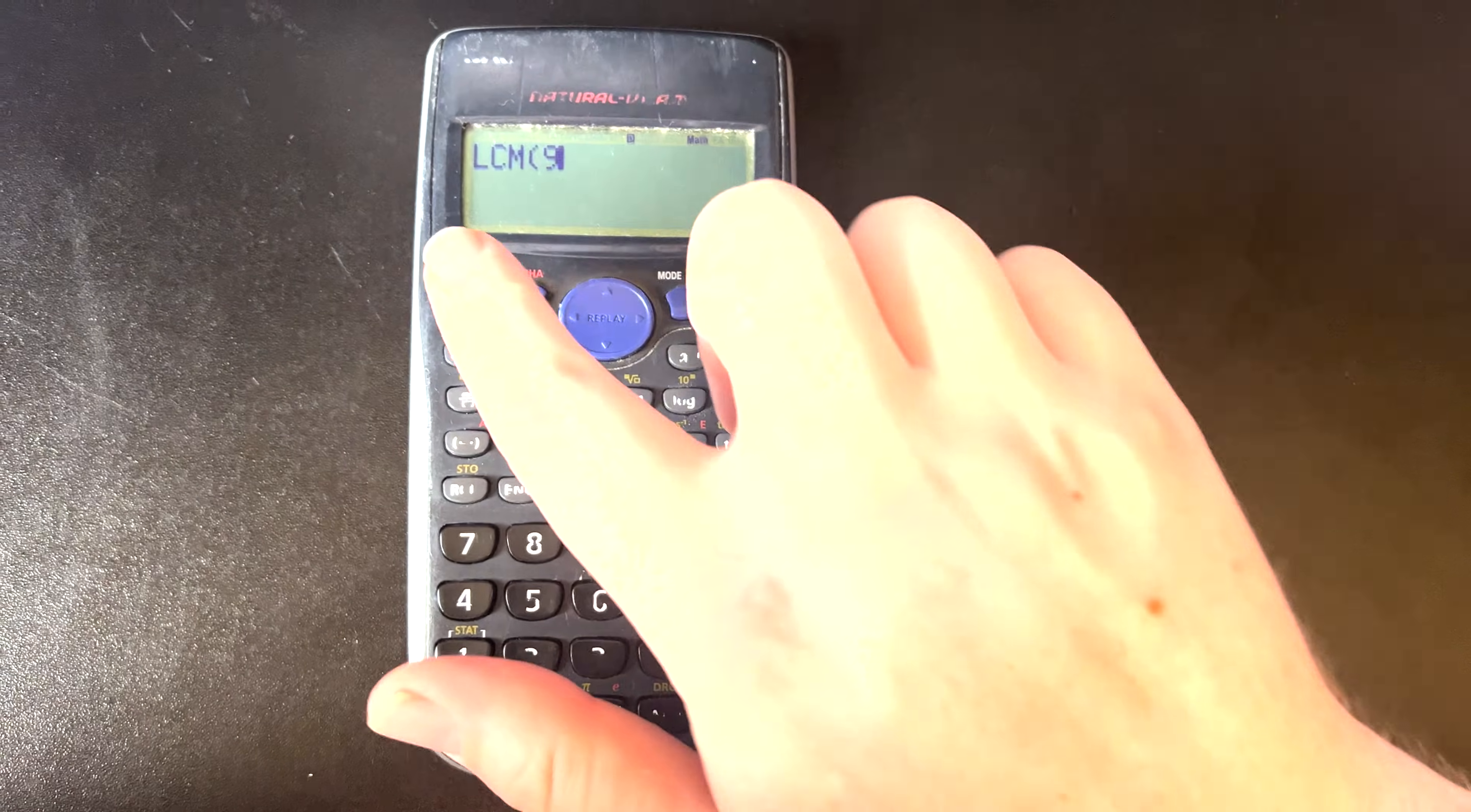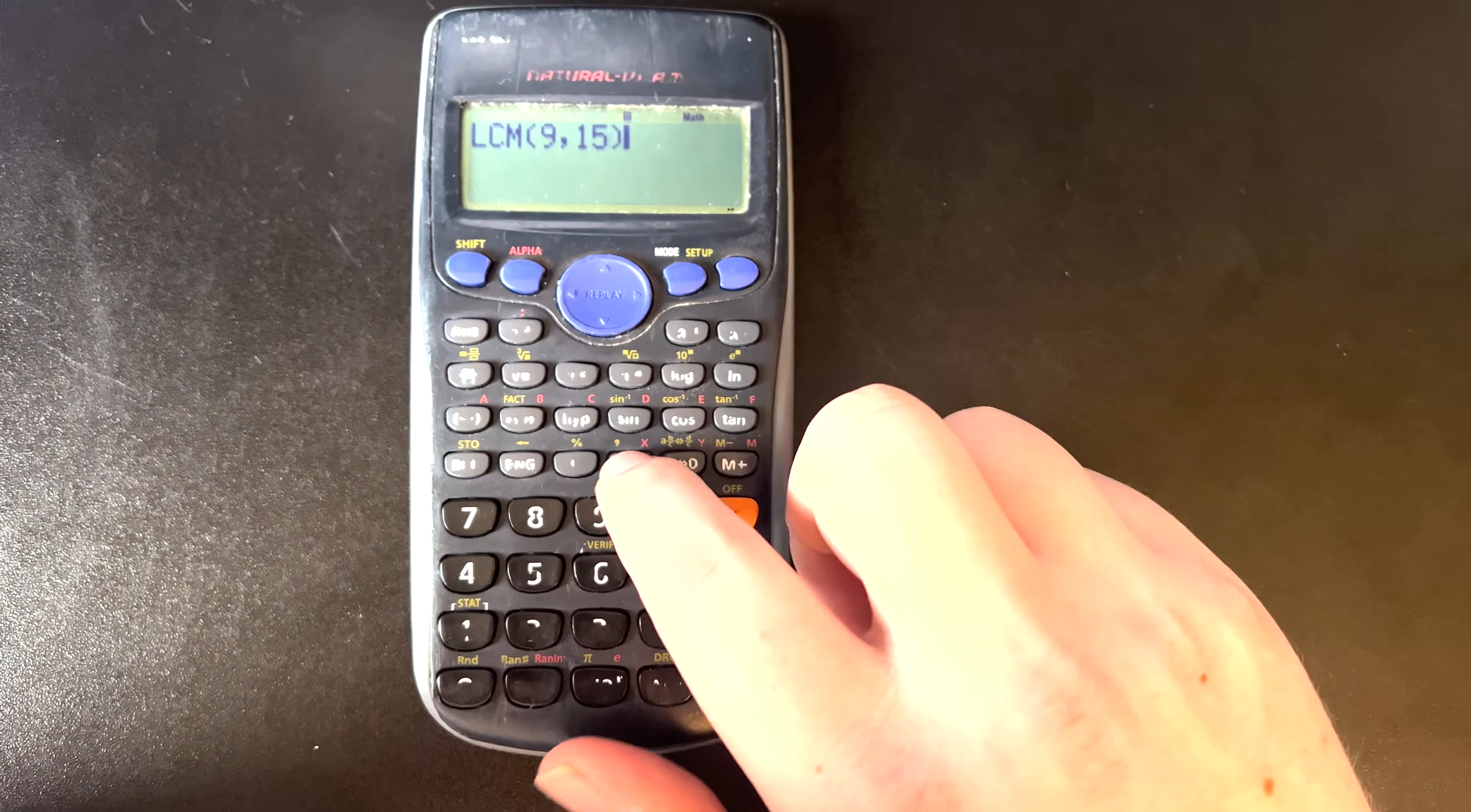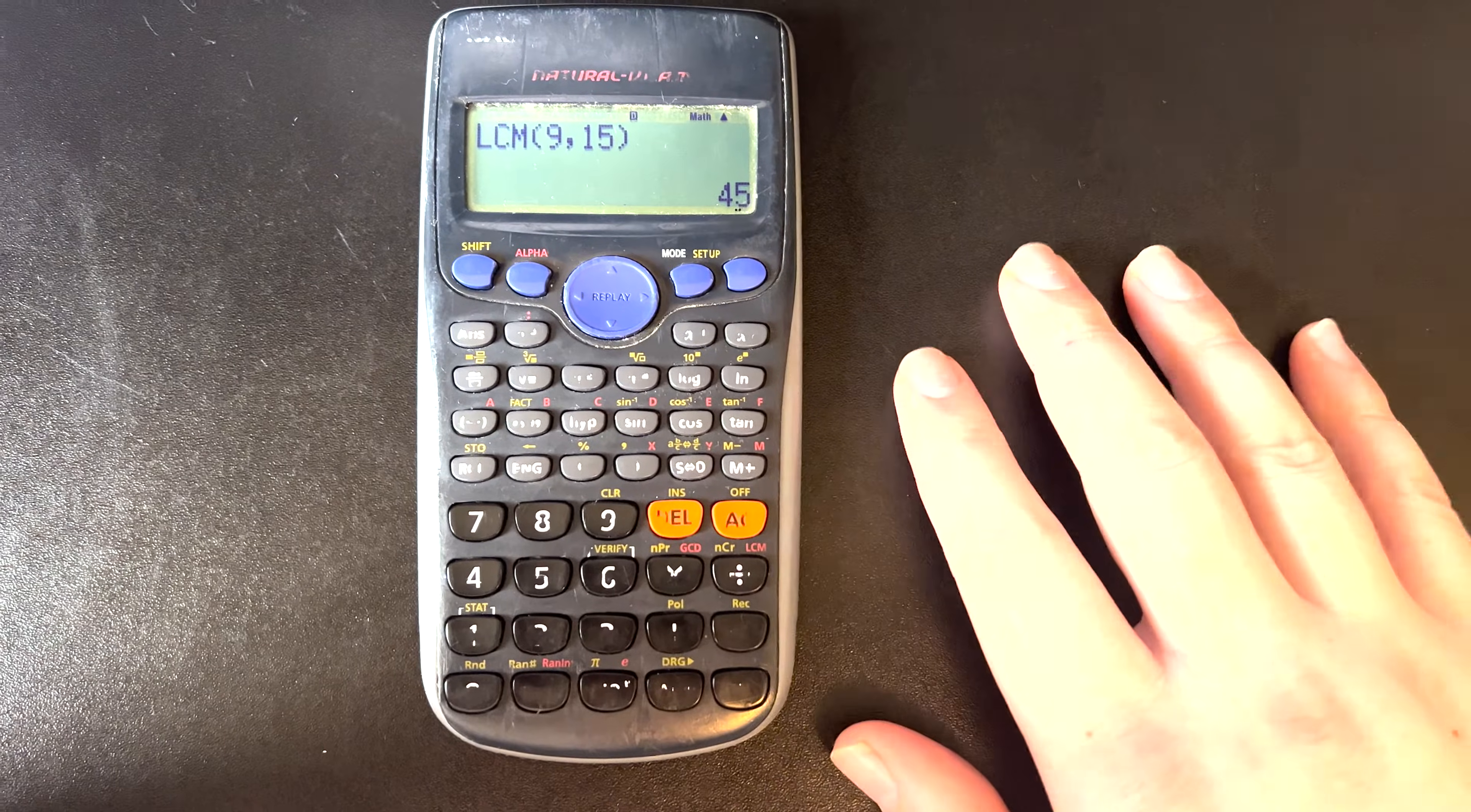So let's say 9, and again, comma, and then let's say maybe 15. Again now closing the parentheses, we'll press equal, and now we know that the least common multiple of these two numbers is 45, and there we go.